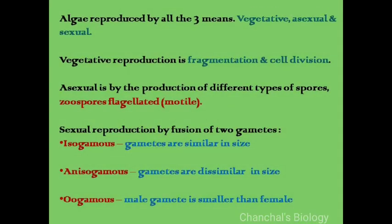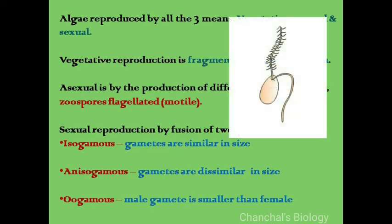Algae reproduce by all three means: vegetative, asexual, and sexual. Vegetative reproduction is by fragmentation and cell division. Asexual reproduction is by the production of different types of spores. The most common spores are zoospores, which contain flagella and are motile.